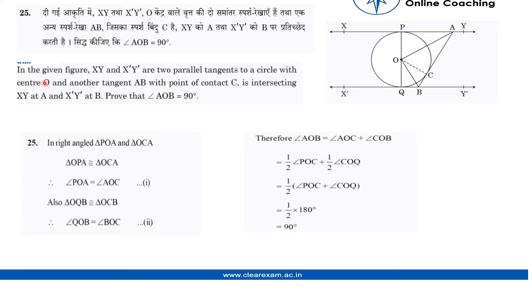Good morning. Our next question is: In the given figure, XY and X'Y' are two parallel tangents to a circle with center O, and another tangent AB with point of contact C is intersecting XY at A and X'Y' at B. Prove that angle AOB is 90 degrees.